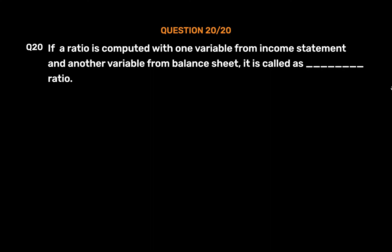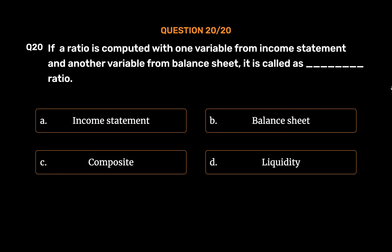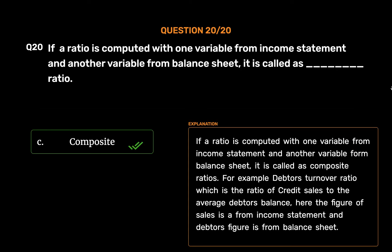Question number 20. If a ratio is computed with one variable from the income statement and another variable from the balance sheet, it is called a: Option A: Income statement ratio. Option B: Balance sheet ratio. Option C: Composite ratio. Option D: Liquidity ratio. The correct answer is Option C: Composite ratio. For example, the debtor's turnover ratio is the ratio of credit sales to the average debtor's balance, where the figure of sales is from the income statement and the debtor's figure is from the balance sheet.